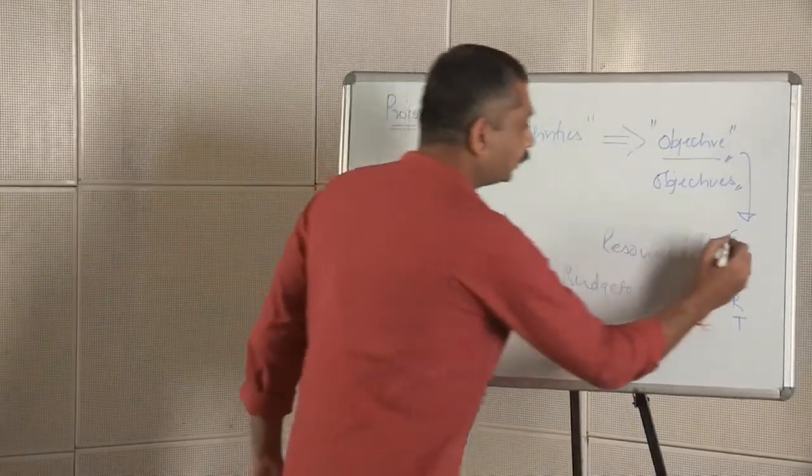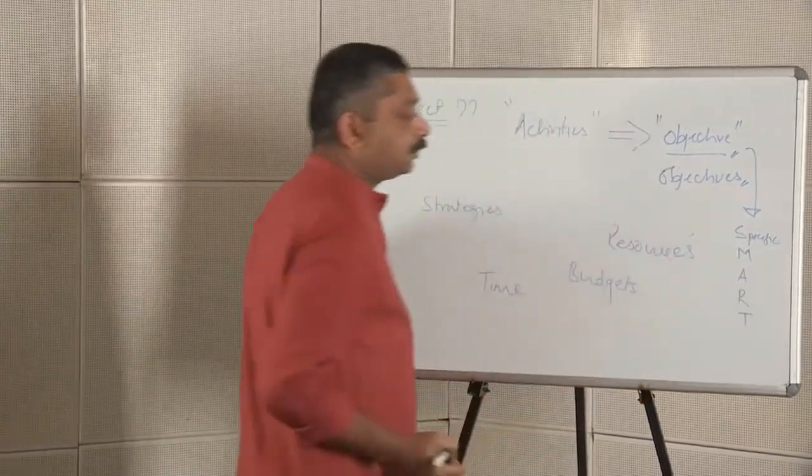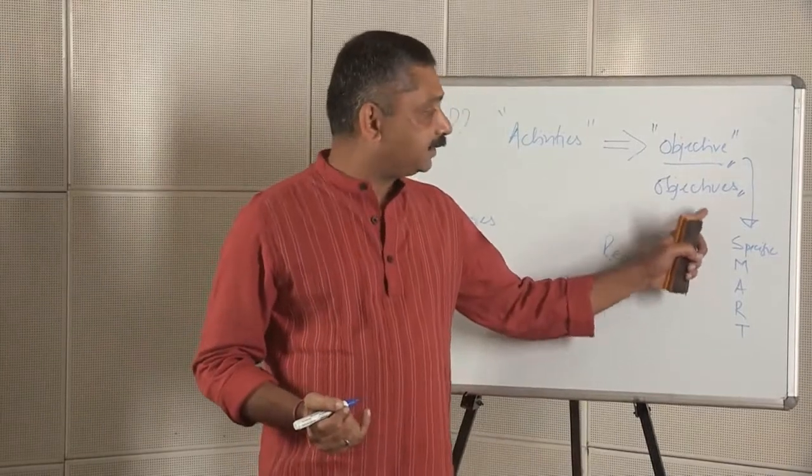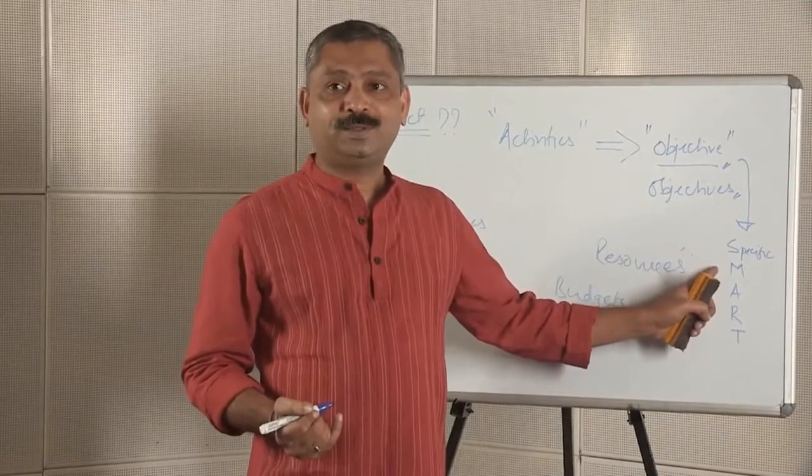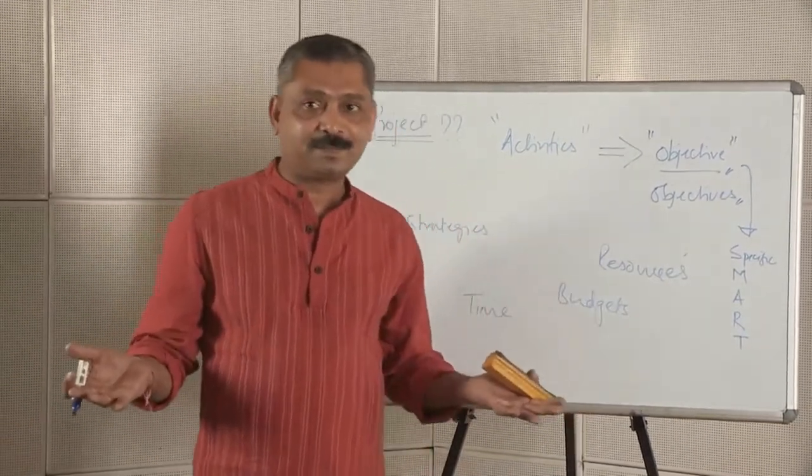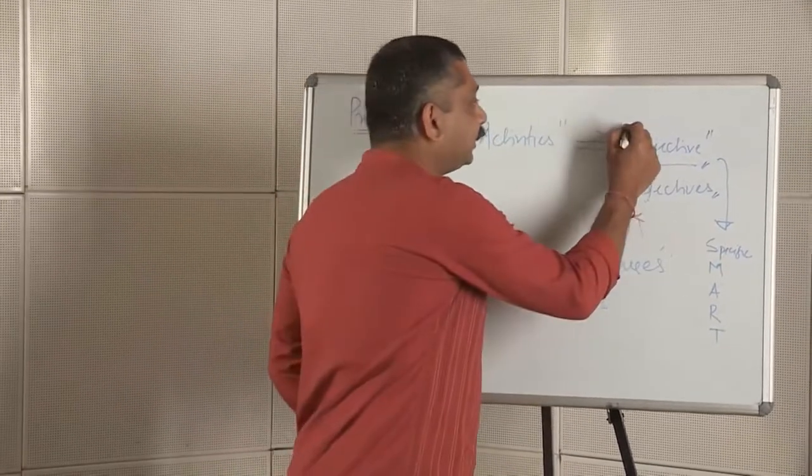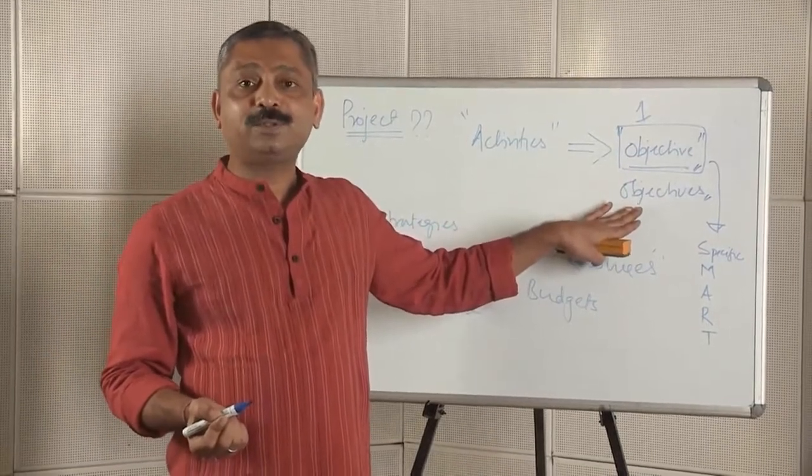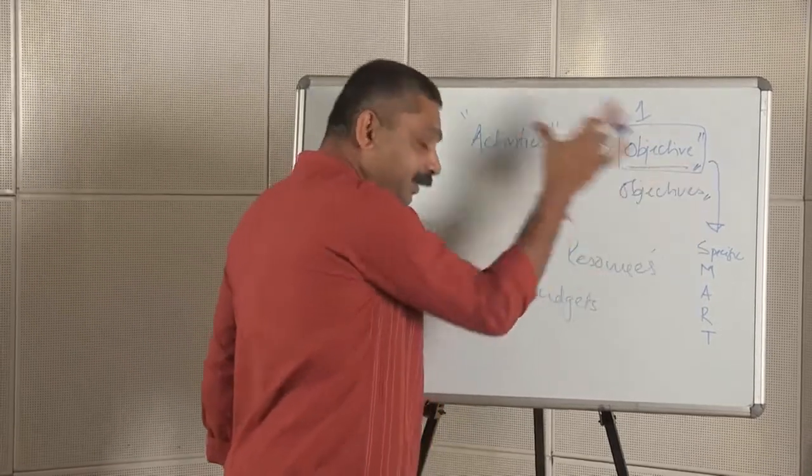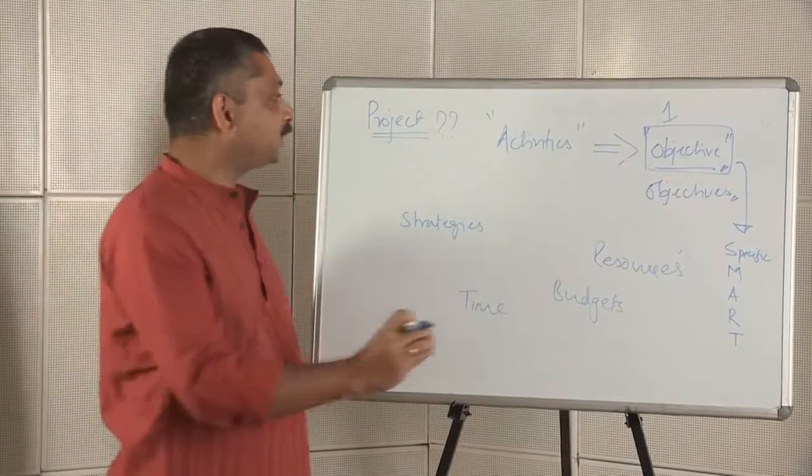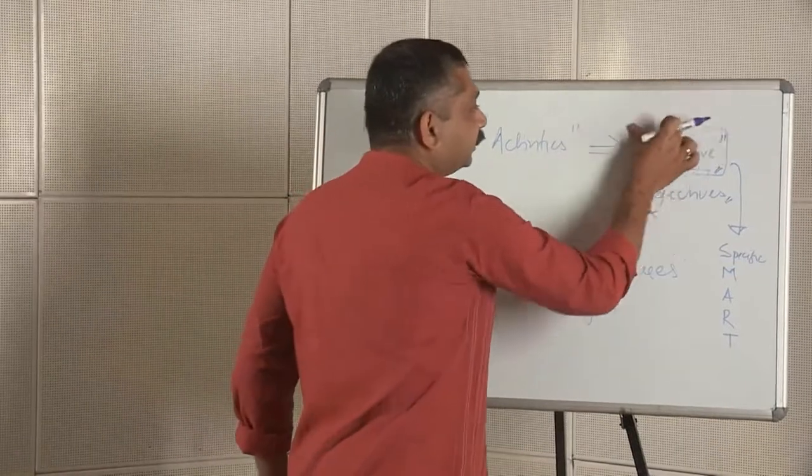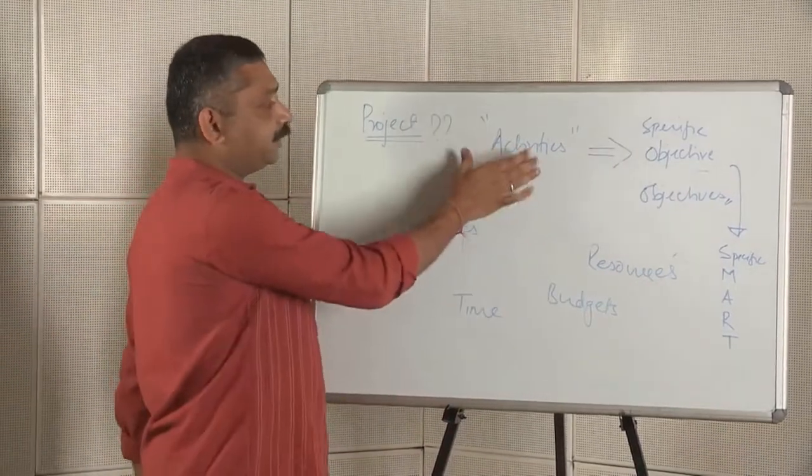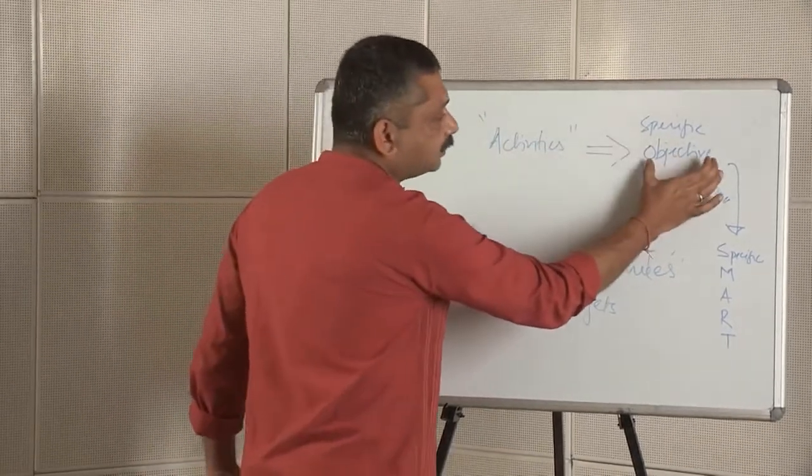We all know what SMART is: specific, measurable, attainable, realistic, and time-bound. If these are the characteristics of objectives, then when I say objectives, is it still specific? No. When talking about two objectives, the specificity is lost. Etymologically, objective means there can be only one. When objectives are more than one, the objectivity and specificity are lost. Therefore, a good, well-designed project would only have one objective—a specific objective.